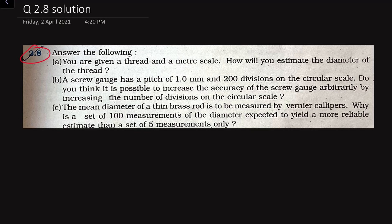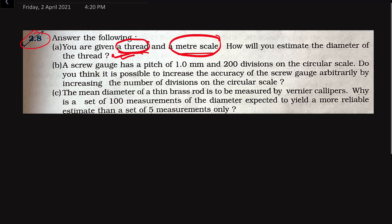In this problem we are given: answer the following. You are given a thread and a meter scale. We cannot directly measure the thread diameter because the thread diameter will be on the order of 10 to the power minus 2 or 10 to the power minus 1 millimeter, whereas the least count of the meter scale is one millimeter.